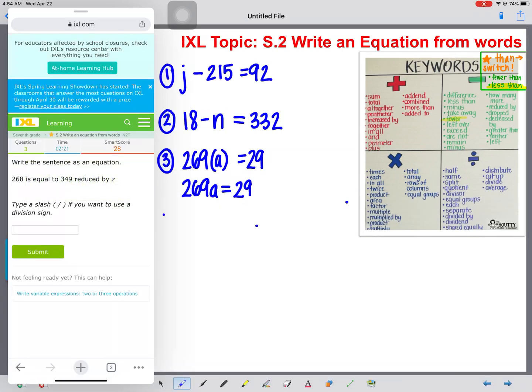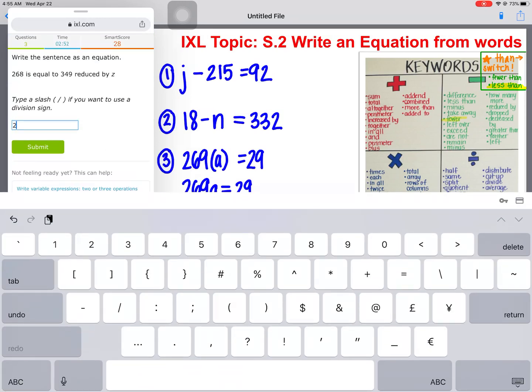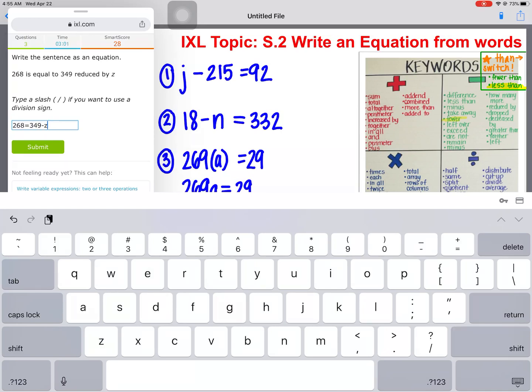269A equals 29. All right, next question. 268 is equal to 349 reduced by Z. Okay, so we have right away 268 is equal to. Is equal to is going to be an equal sign. Now we have 349 reduced by Z is going to be minus Z. Let's type it in. So we have 268 equal to 349 minus Z.